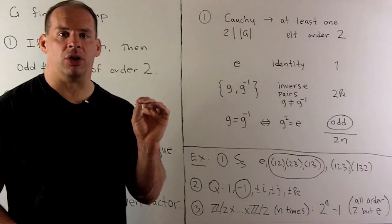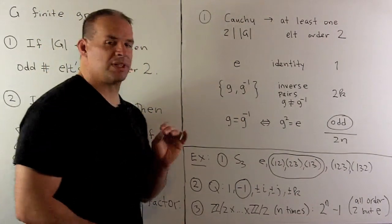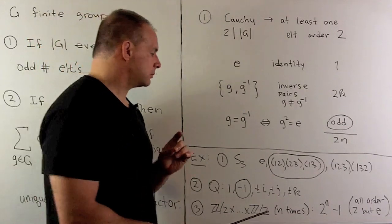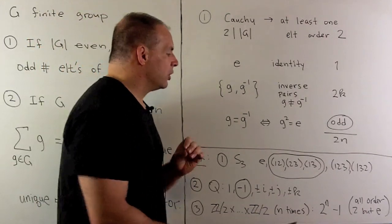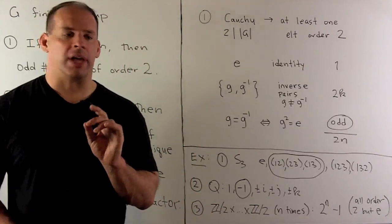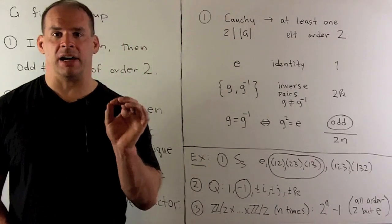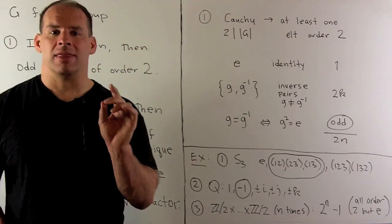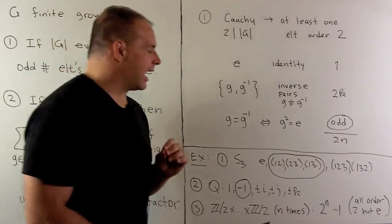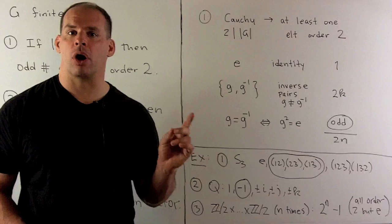Finally, let's look at an abelian group. I'm going to take a product of Z mod 2 with itself N times. Here we'll have 2 to the N minus 1 elements of order 2 — we have 2 to the N elements in the group and we throw away the identity, then every other element has order 2. So again, we have an odd number of elements of order 2.